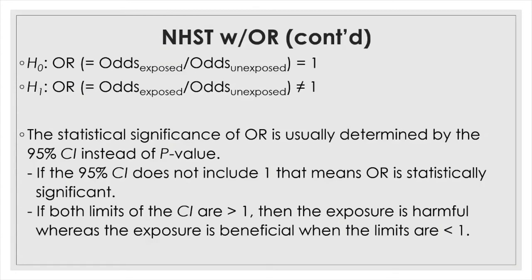The idea of how to make the statistical decision is very similar to reading the 95% confidence interval of a mean difference from a t-test. If the 95% confidence interval of the mean difference contains 0, the mean difference is not statistically different from 0. It is only when both limits are negative or both positive that the difference is significant. Likewise, if the 95% confidence interval of the odds ratio does not include 1, the odds ratio is statistically significant. If it does include 1, the risk factor is not statistically significant in increasing the odds of having the disease.